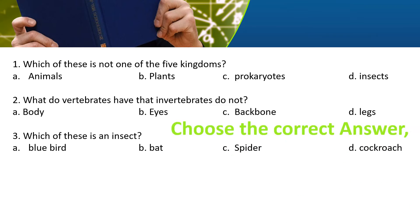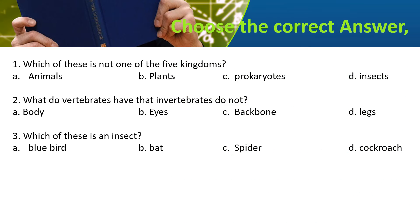The next question — Choose the correct answer. First: which of these is not one of the five kingdoms? Options are A, B, C, or D. You should know the answer.